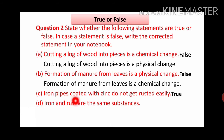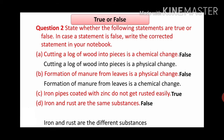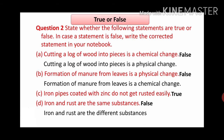Next one: iron and rust are the same substances. Are iron and rust both the same substances? No, it is not. So this is false. When iron reacts with oxygen, it is converted into rust. So the correct answer is: iron and rust are different substances. Next one: condensation of steam is not a chemical change. When steam condenses, water vapor is converted into water. Yes, it is true, because this is not a chemical change - it is a physical change.